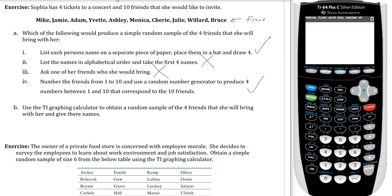Use a TI graphing calculator to obtain a random sample of 4 friends that she will bring with her and give the names. So there's a step process to go through this. First, kind of like what part 4 said, we are going to number the friends. So Mike through Bruce, I'm going to number these 1, 2, 3, 4, 5, 6, 7, 8, 9, and 10. I'm going to give them numbers.